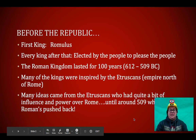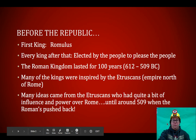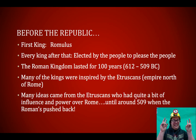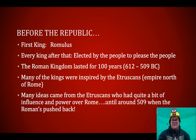Before the republic, there was a king — King Romulus — and every king after that was elected by the people to please the people. The Roman kingdom lasted for about 100 years, and many of the kings were inspired by the Etruscans, which was an empire north of Rome. A lot of the kings were actually from the Etruscan Empire, and although the kings were elected, they really weren't elected fairly. The people with lots of money and lots of land were the ones getting to know and electing certain kings, or certain kings would give those people benefits and basically find ways to pay off the vote.